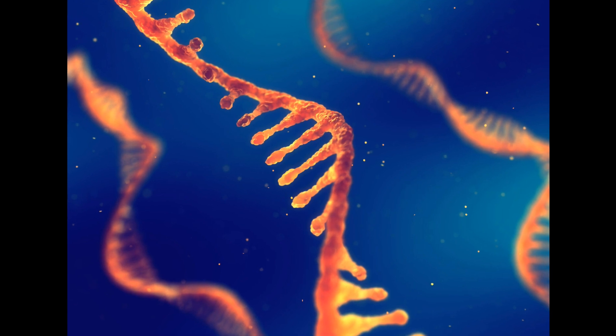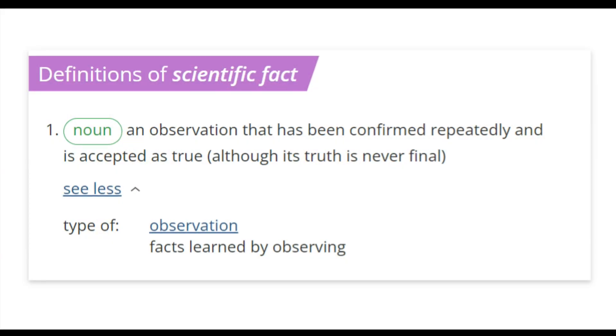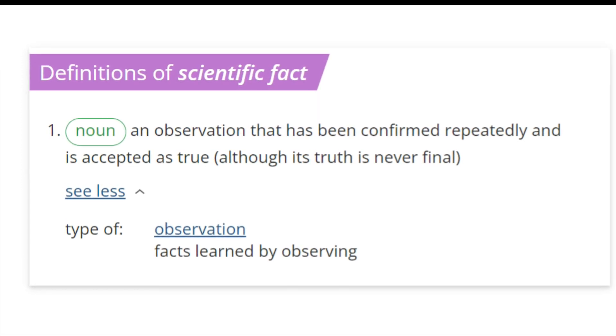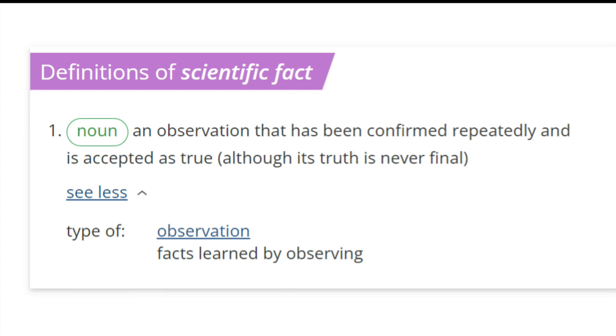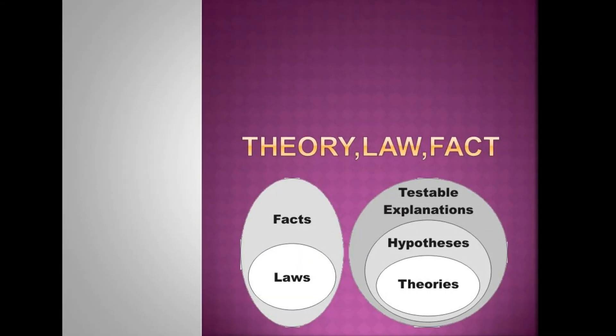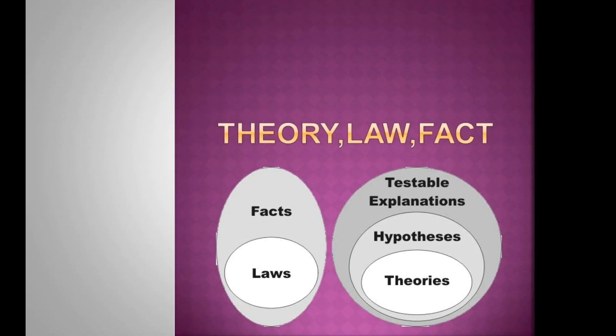A fact is an observation that has been confirmed repeatedly and is accepted as true, although its truth is never final. A theory never graduates to a fact, but is instead based on facts.